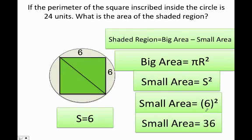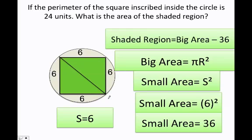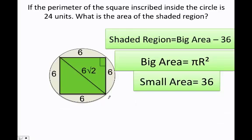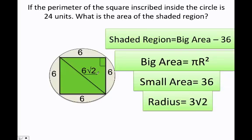This is very important: since all sides of the square are 6, I can see that the diagonal of the square is also the diameter of the circle. Inside a square there is always a 45-45-90 triangle, so the diagonal is 6 times the square root of 2. The radius is half the diameter, so dividing by 2 gives a radius of 3√2.